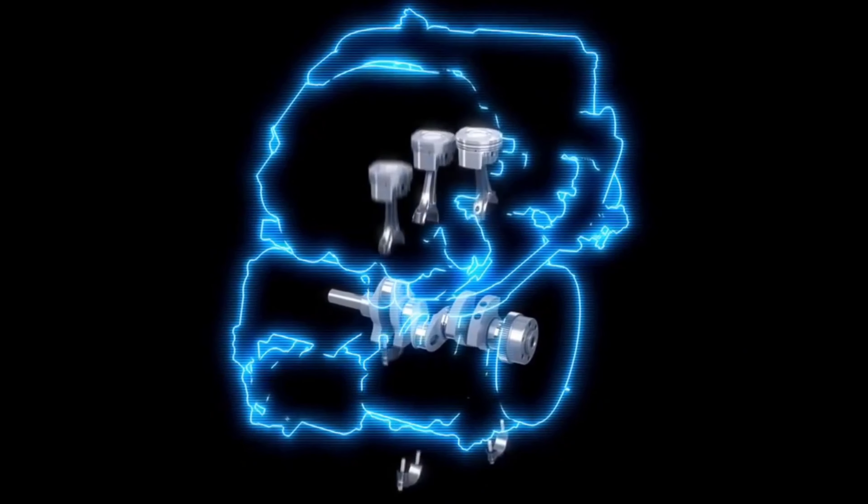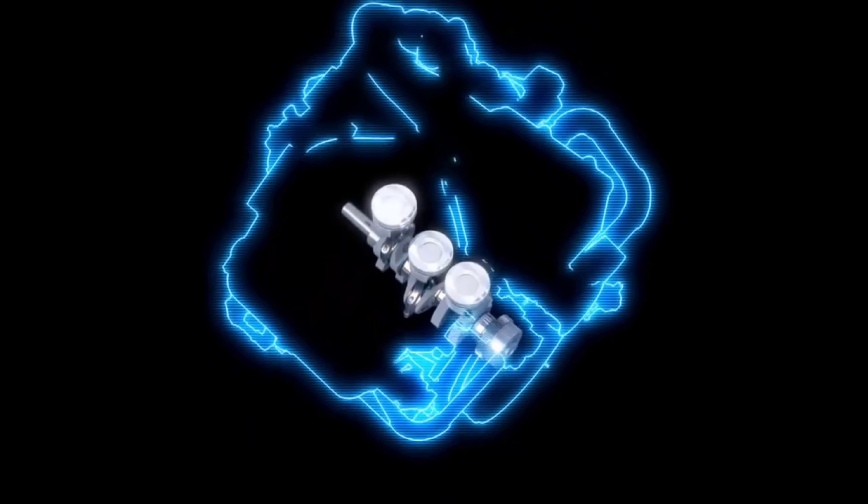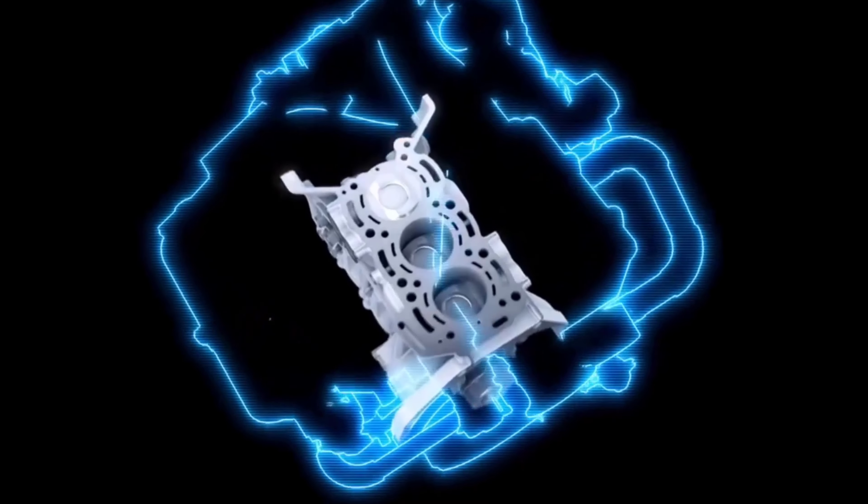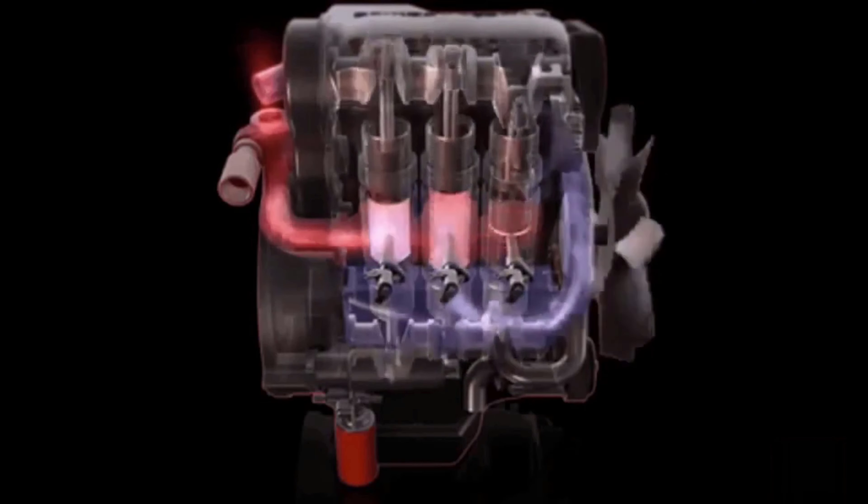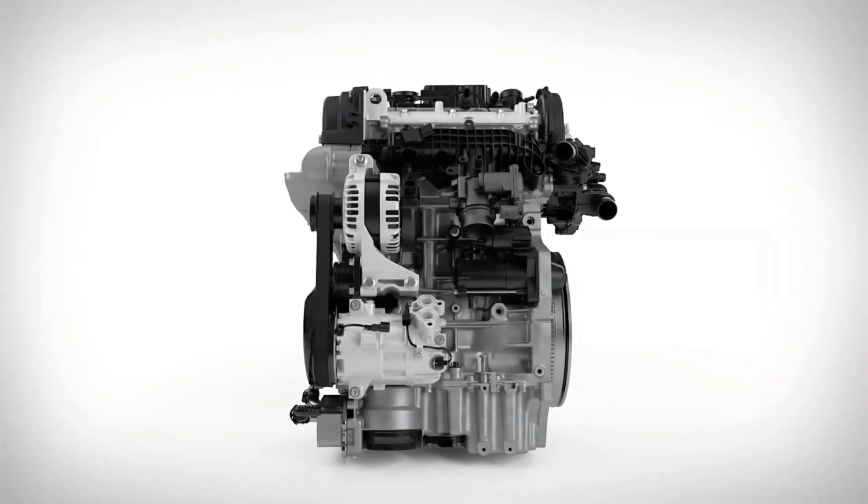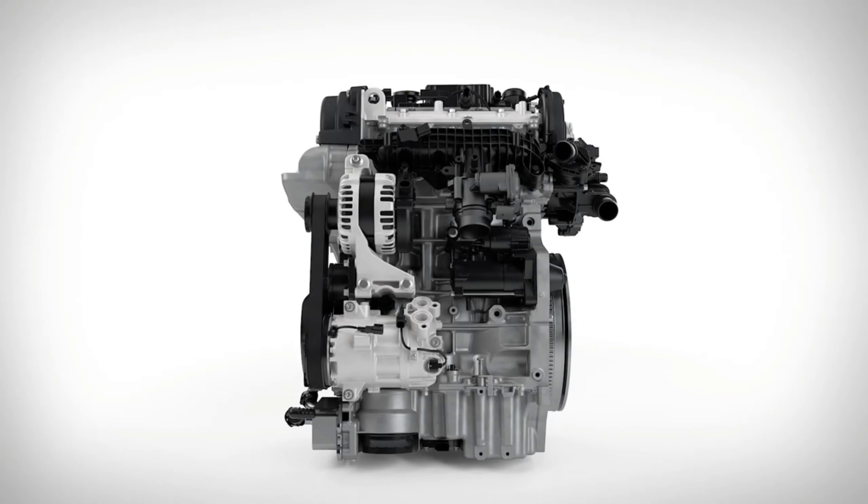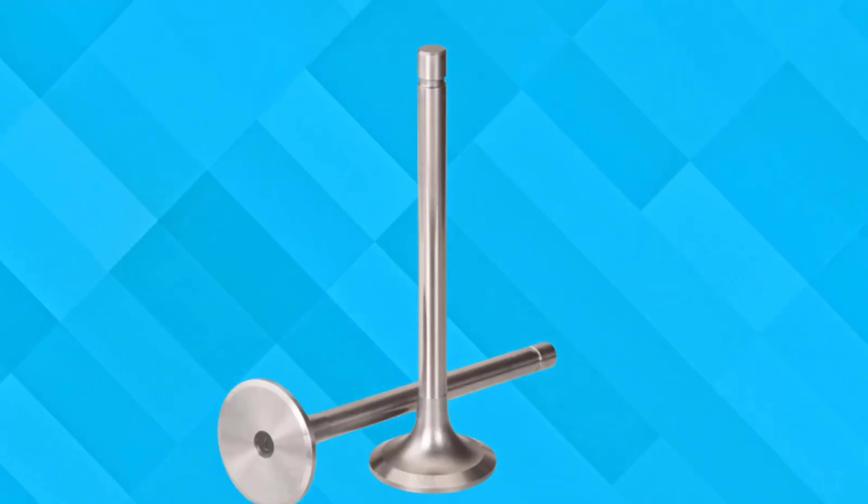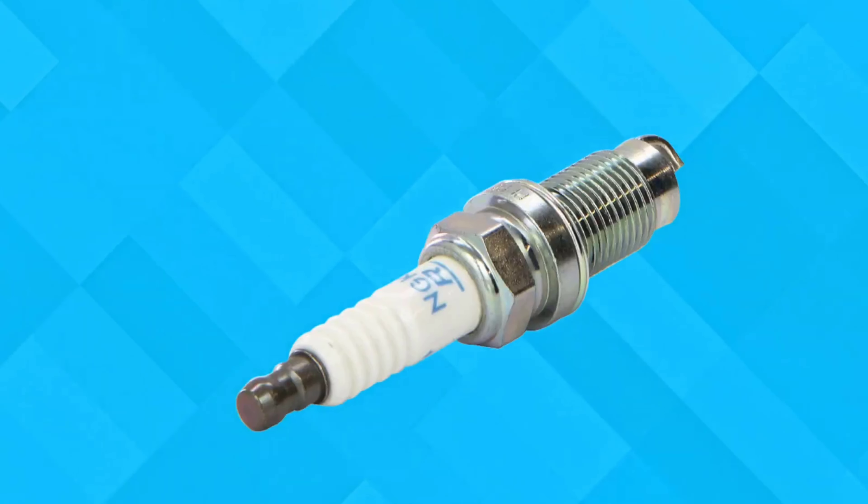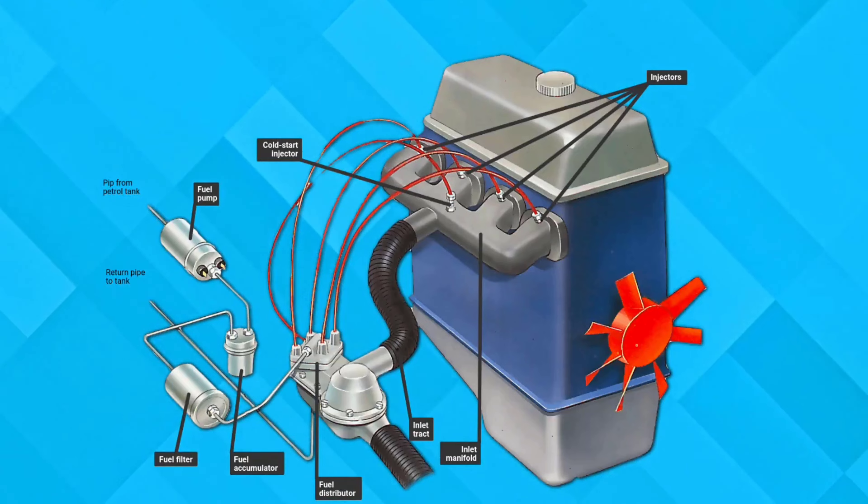The heart of this concept is a potent 1.6-liter turbocharged three-cylinder engine, derived from the GR Corolla and GR Yaris models, now optimized for hydrogen combustion. The incorporation of robust armored fuel tanks ensures the safe storage of hydrogen, while the engine receives reinforced components such as valves, valve seats, connecting rods, and fuel injectors, engineered for gaseous fuel usage.